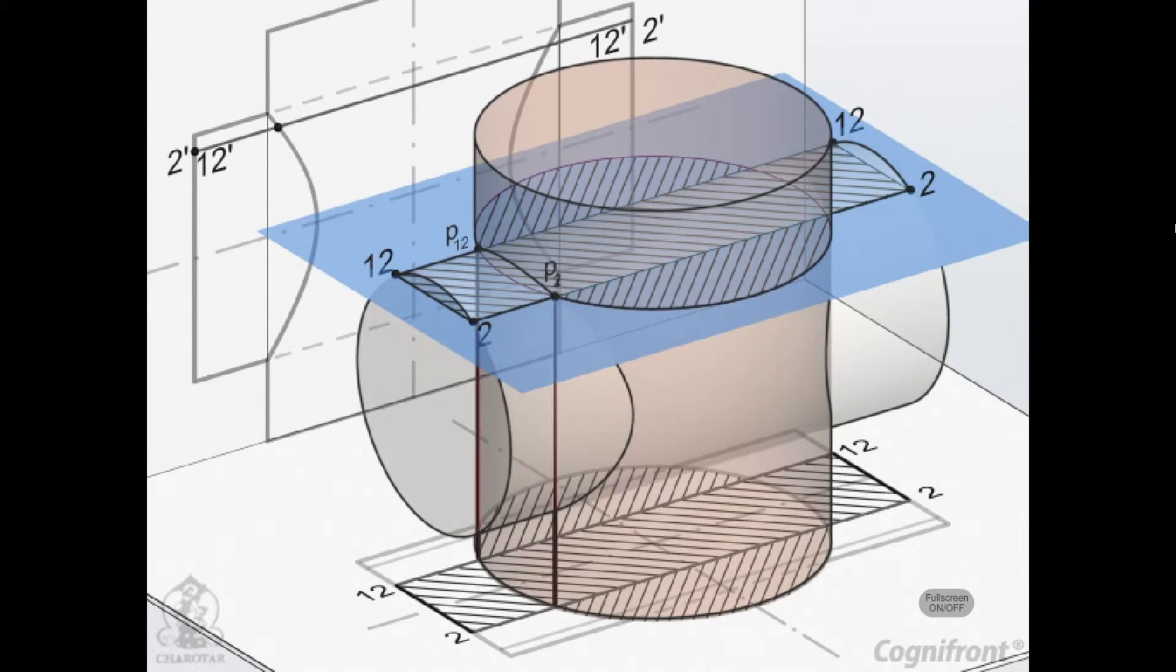These points are first marked in the top view and then projected to the points P-2 and P-12 on the lines 2-2 and 12-12 in the front view.